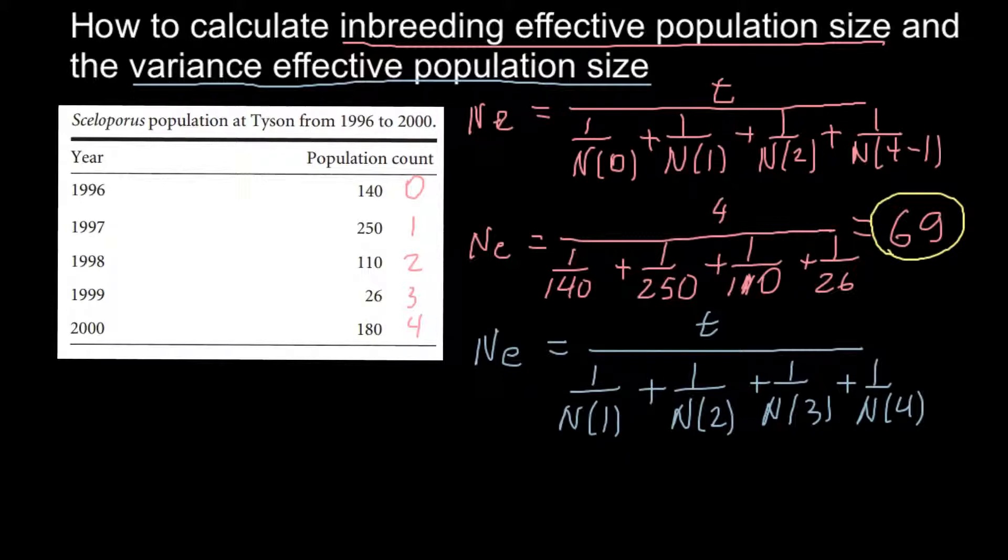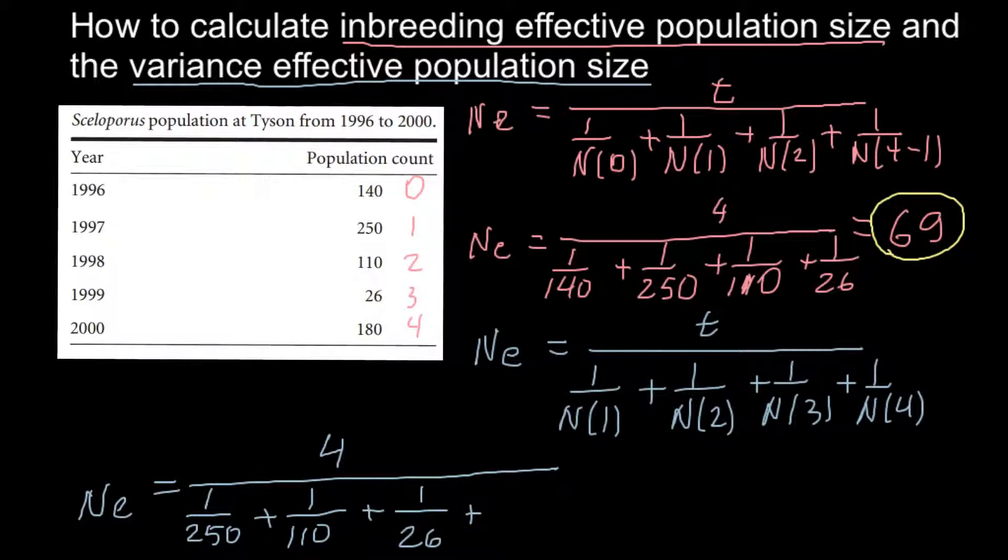So Ne would equal 4 divided by 1 divided by 250, this is the number in generation 1, plus 1 divided by 110, the number of individuals in generation 2, plus 1 divided by 26, number of individuals in generation 3, and plus 1 divided by 180, number of individuals in generation 4.